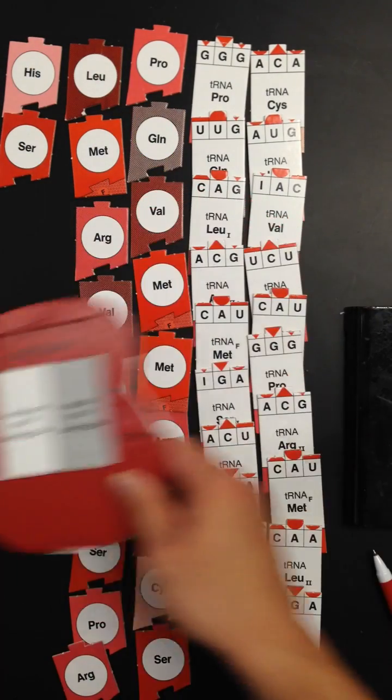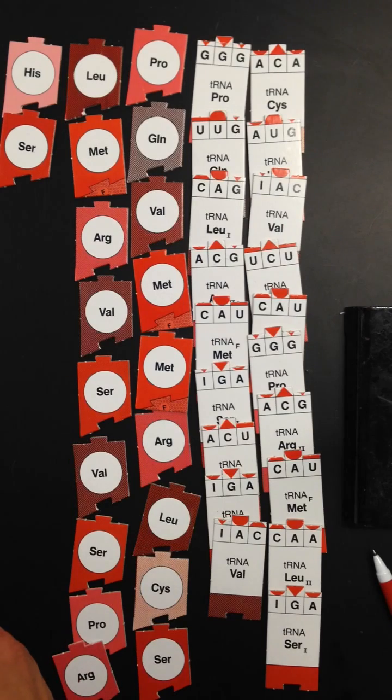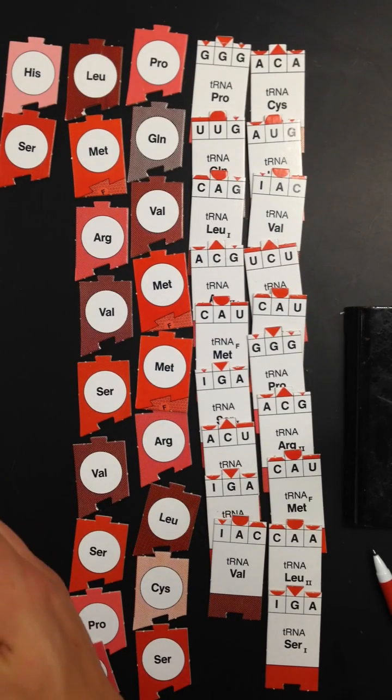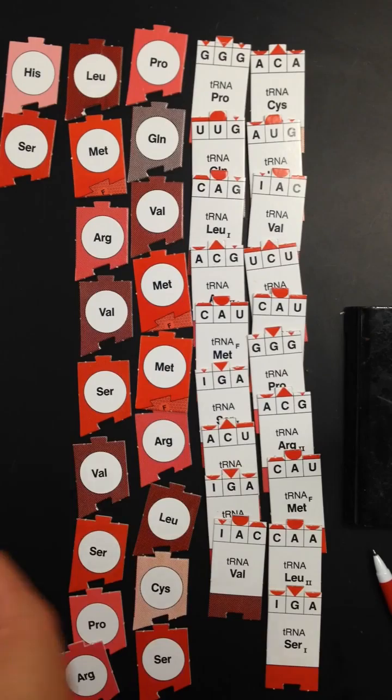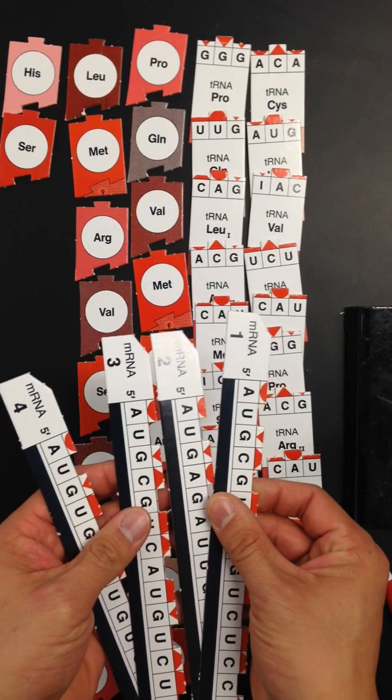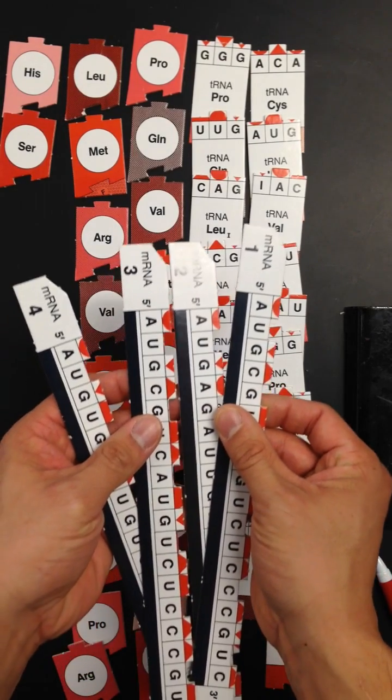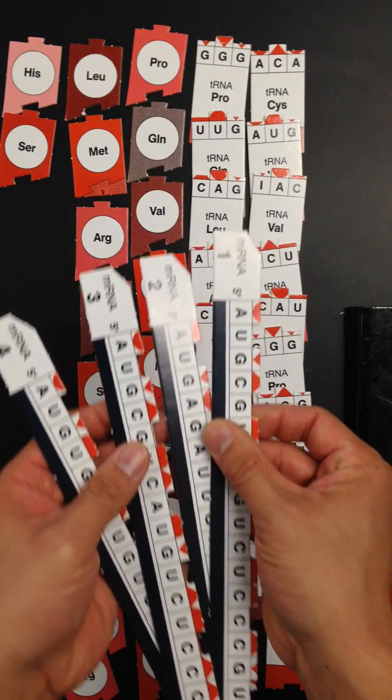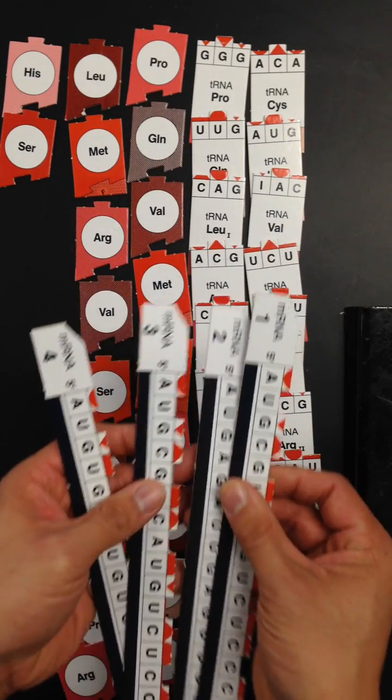You have a ribosome, and then you're going to have your messenger RNA pieces. You're going to have four messenger RNA pieces that you need to translate into proteins.